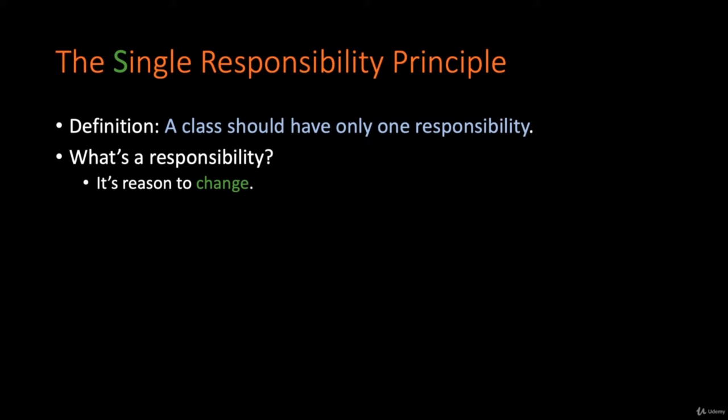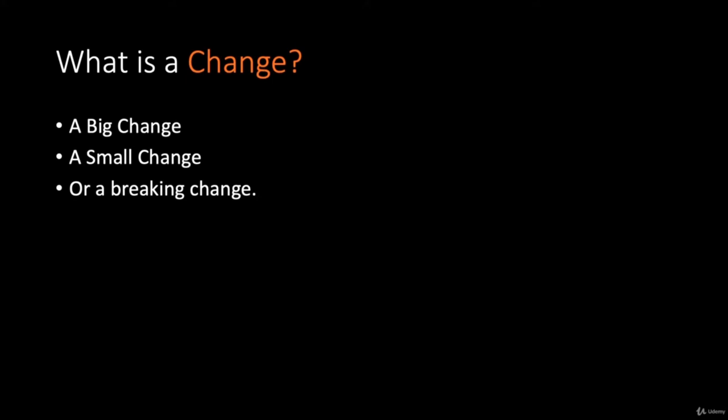Single Responsibility is the most powerful principle and it's very important that you understand it well. To do so, you need to understand what are the reasons for which a class can change, or how to find the number of reasons there are in a class due to which it can change. A change can be defined as an alteration in behavior. With respect to a class, the methods of the class represent its behavior. This does not in any way mean that the number of methods in a class equals the number of reasons a class might have to change.